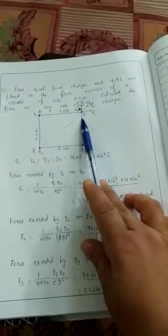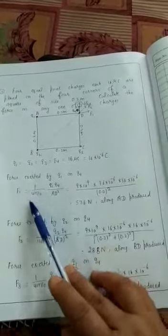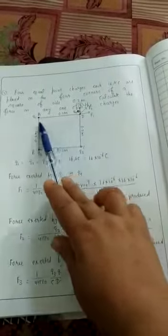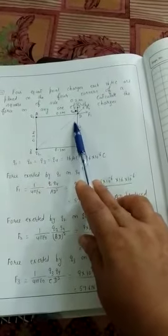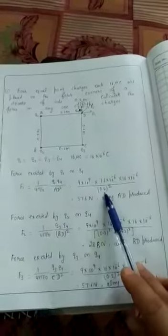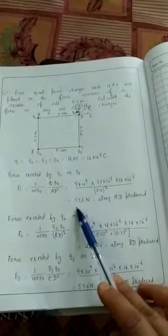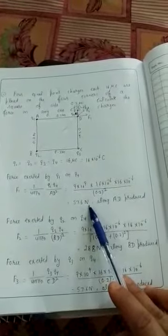By Coulomb's law, the force between them can be written as F1 = 1/(4πε₀) × q1q4/AD². The value of AD is 0.2. When you calculate the force, it is 57.6 newton.